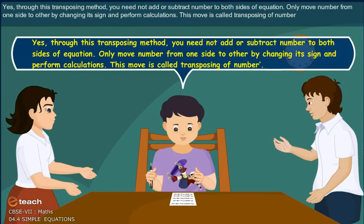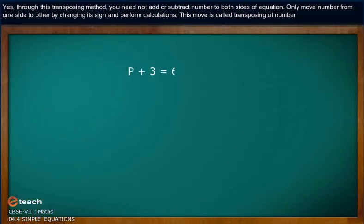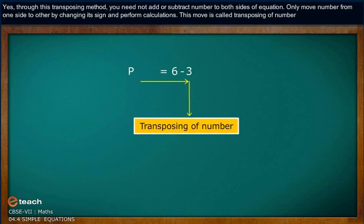Through this transposing method, you need not add or subtract numbers to both sides of the equation. Only move a number from one side to the other by changing its sign and perform calculations. This move is called transposing of a number.